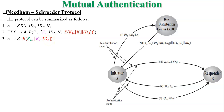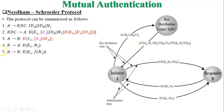In step four, authentication is achieved. B sends one message encrypted using the session key along with nonce N2 to user A. In step five, user A sends a reply to that nonce using the session key back to user B in encrypted form. User B decrypts that message and gets the reply from nonce N2.